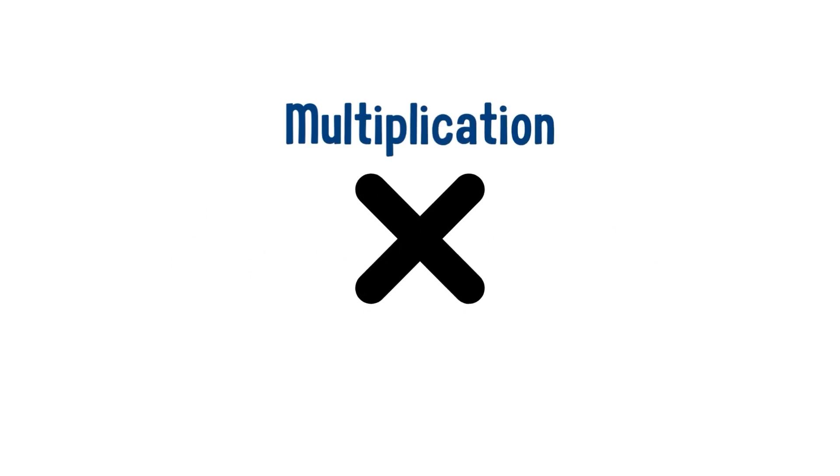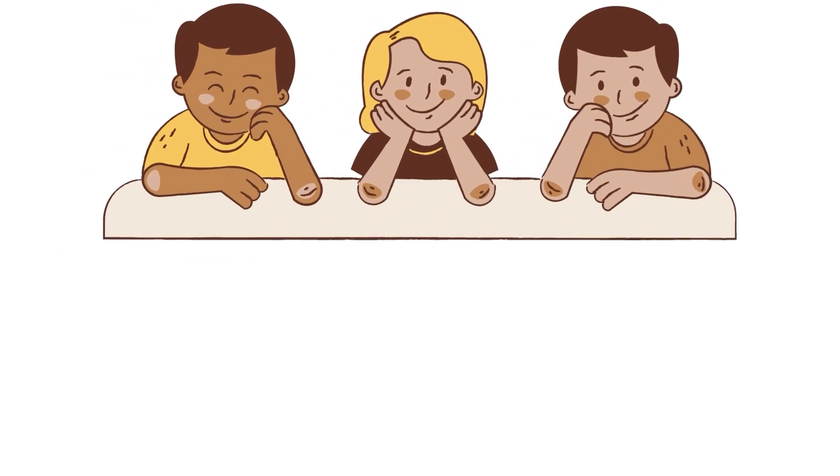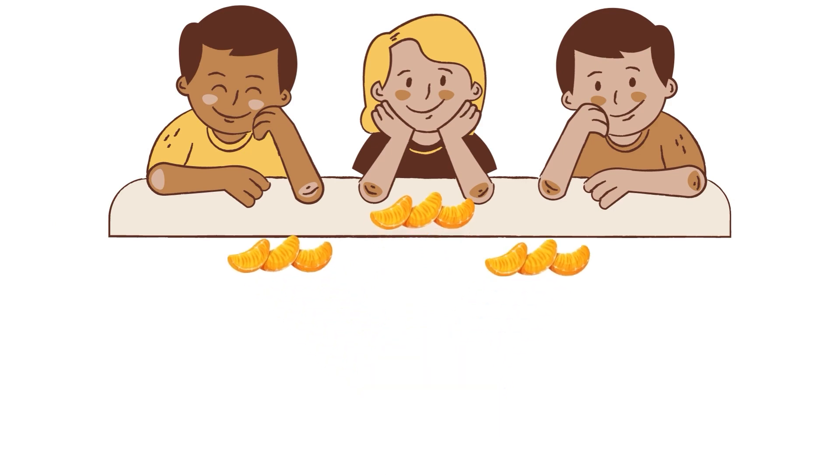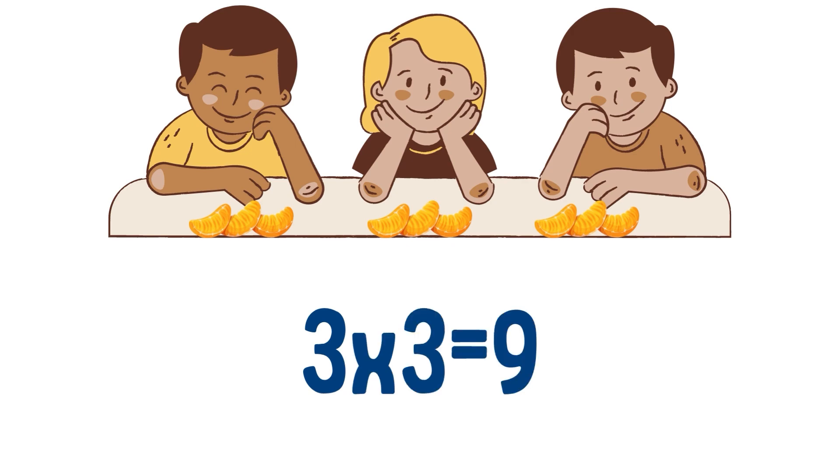This is called the multiplication symbol. We use this symbol when we want to multiply two numbers. Let's say, you have three friends, and you give three tangerine slices to each of them. How many tangerine slices did you give in total? Yes, three multiplied by three equals nine slices.